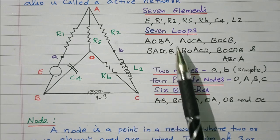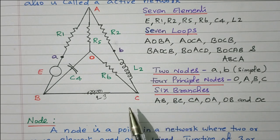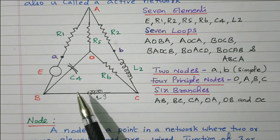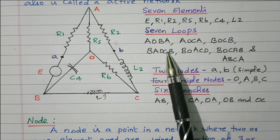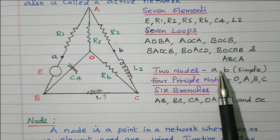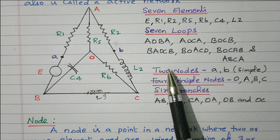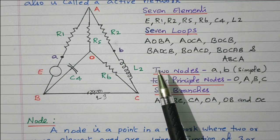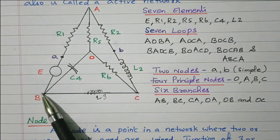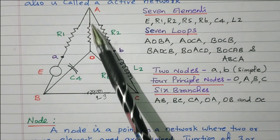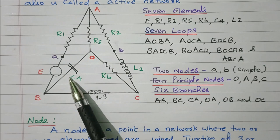Next we will see the loop. What is meant by a loop? A single closed path for current flow is called a loop. There are 7 loops available. The first one is A–O–B–A: starting from A, going to O, then B, and back to A — this is one closed path, called a loop.